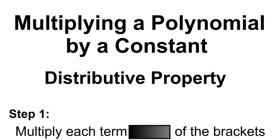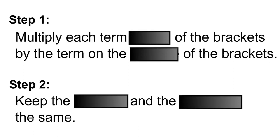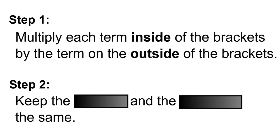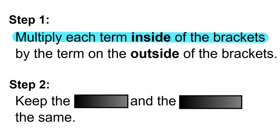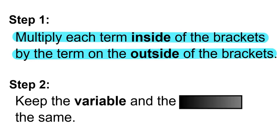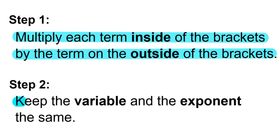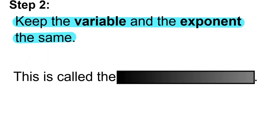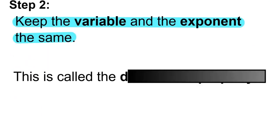Multiply a polynomial by a constant using the distributive property. Step 1: Multiply each term inside the brackets by the term on the outside of the brackets. Step 2: Keep the variable and the exponent the same. This is called the distributive property.